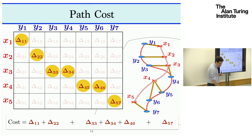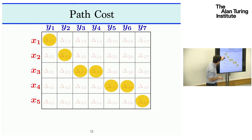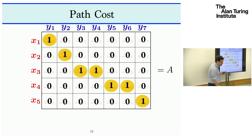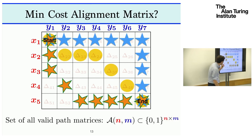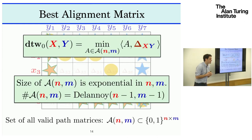The natural notion of cost for this alignment is the sum of all the cells you have walked upon during the walk from the top-left to the bottom-right of the matrix. The problem of computing an optimal alignment means finding an alignment of minimal cost. We can cast this as finding a binary matrix that goes from top-left to bottom-right, satisfying a monotonicity constraint. We formulate this: find the best matrix A with binary entries satisfying these constraints. The set of all valid alignments is called the set of Delanoi paths on this grid of size n×m, and it is of exponential size.